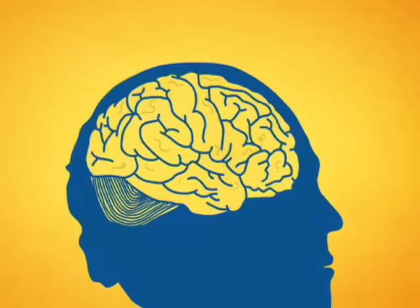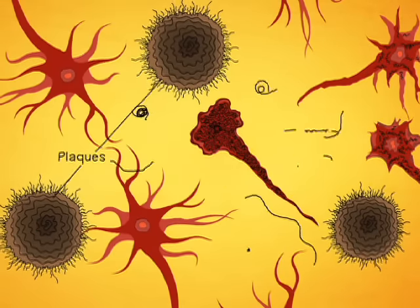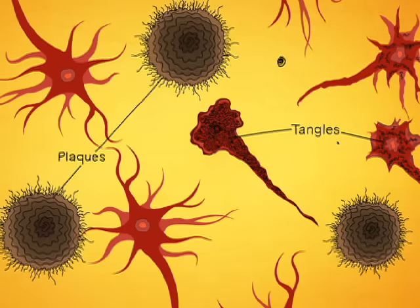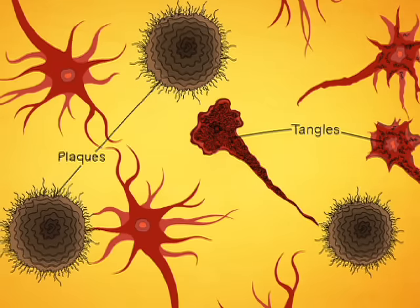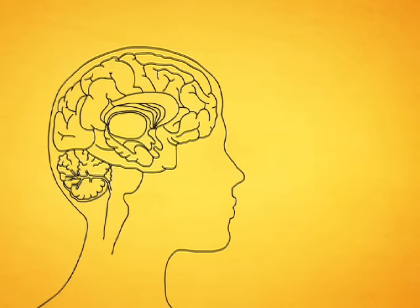The disease comes on gradually as two abnormal protein fragments, called plaques and tangles, accumulate in the brain and kill brain cells. They start here, in the hippocampus, the part of the brain where memories are first formed.